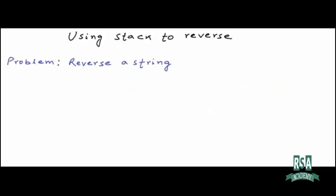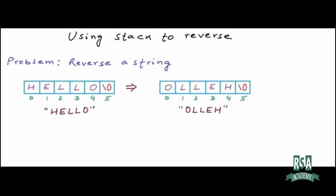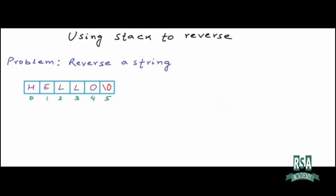Let's first discuss reversal of string. I have a string in the form of a character array — the string 'hello'. A string is a sequence of characters. This is a C-style string, so it must be terminated with a null character. Reversal means characters in the array should be rearranged. The null character is used only to mark the end of the string and is not part of the string. Let's discuss how we can solve this problem using a stack.